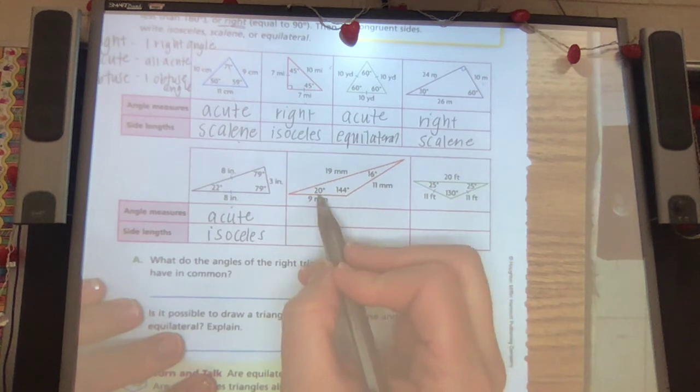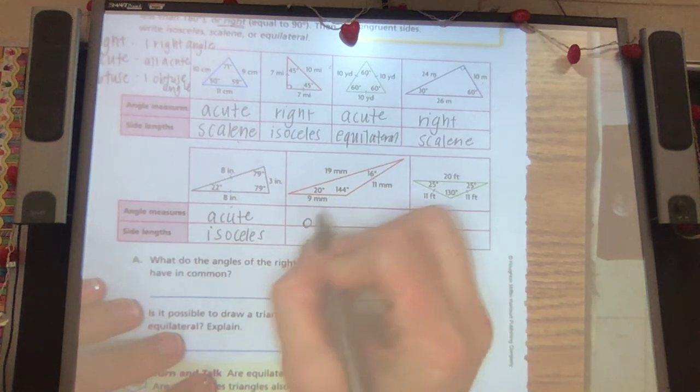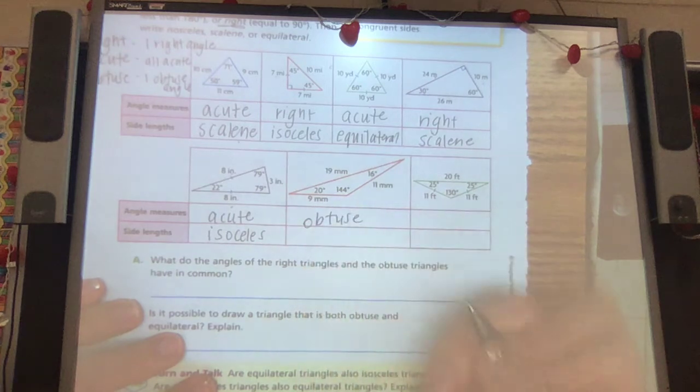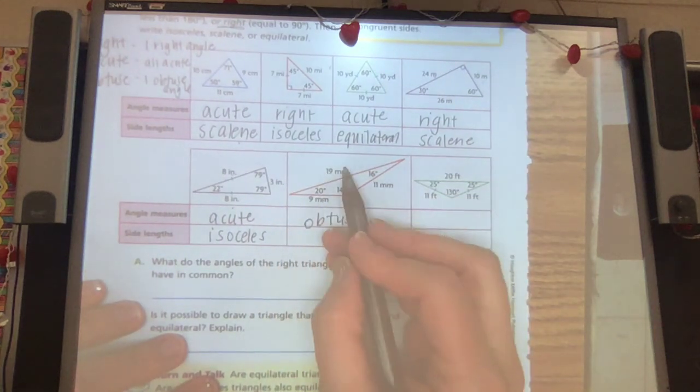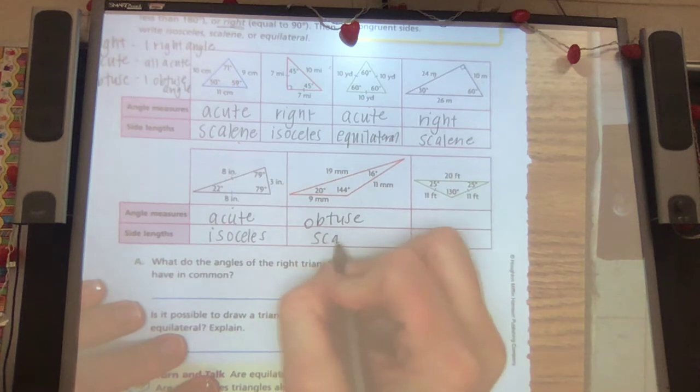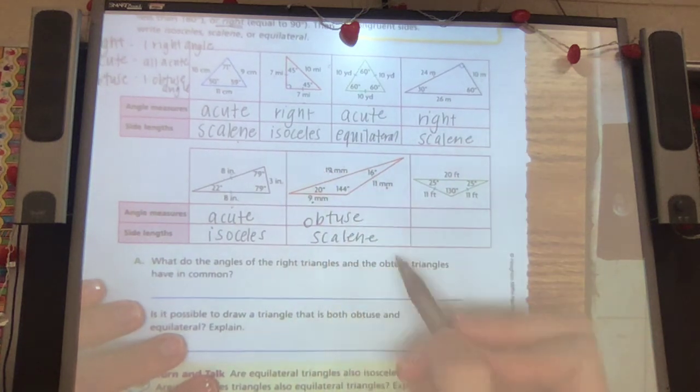16, 144, and 20. That one is obtuse because it has one angle larger than 90. And 9, 19, 11 means scalene. They're all different. There's none congruent.